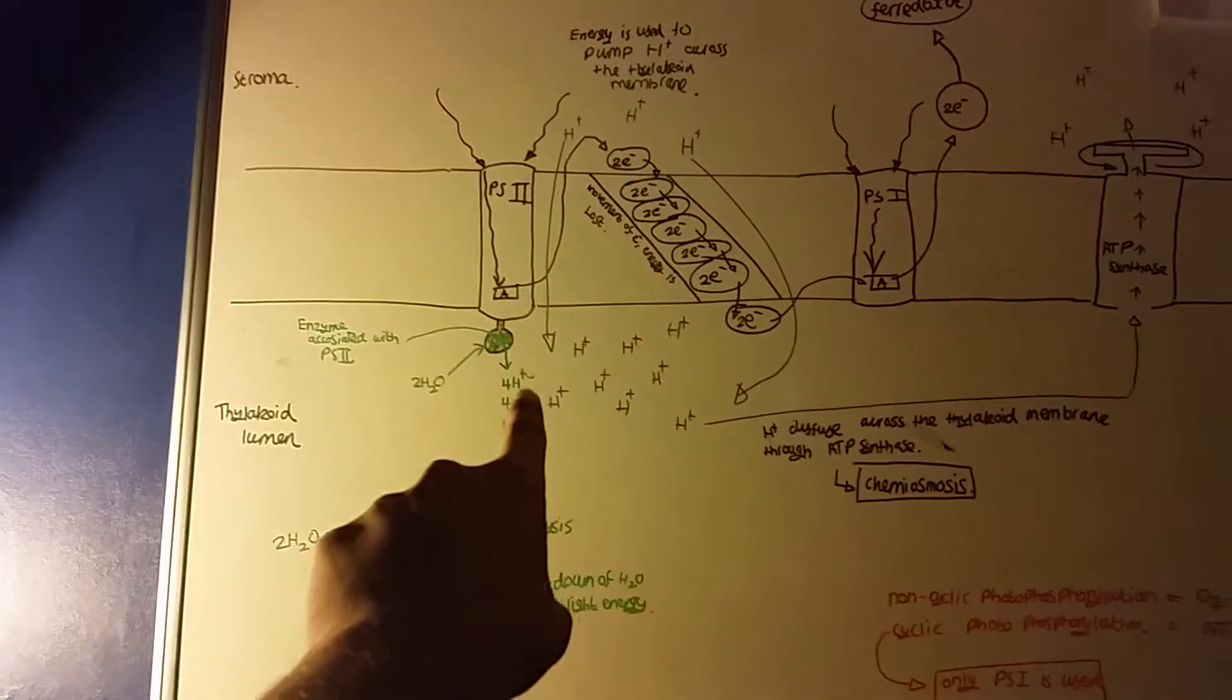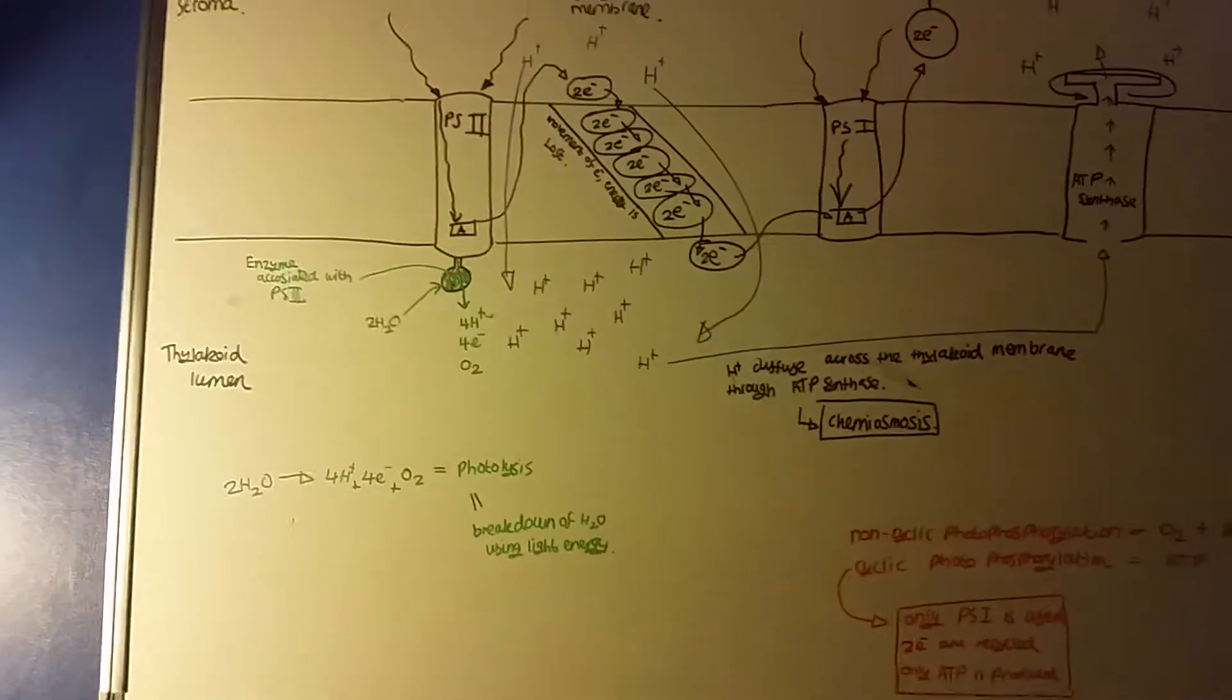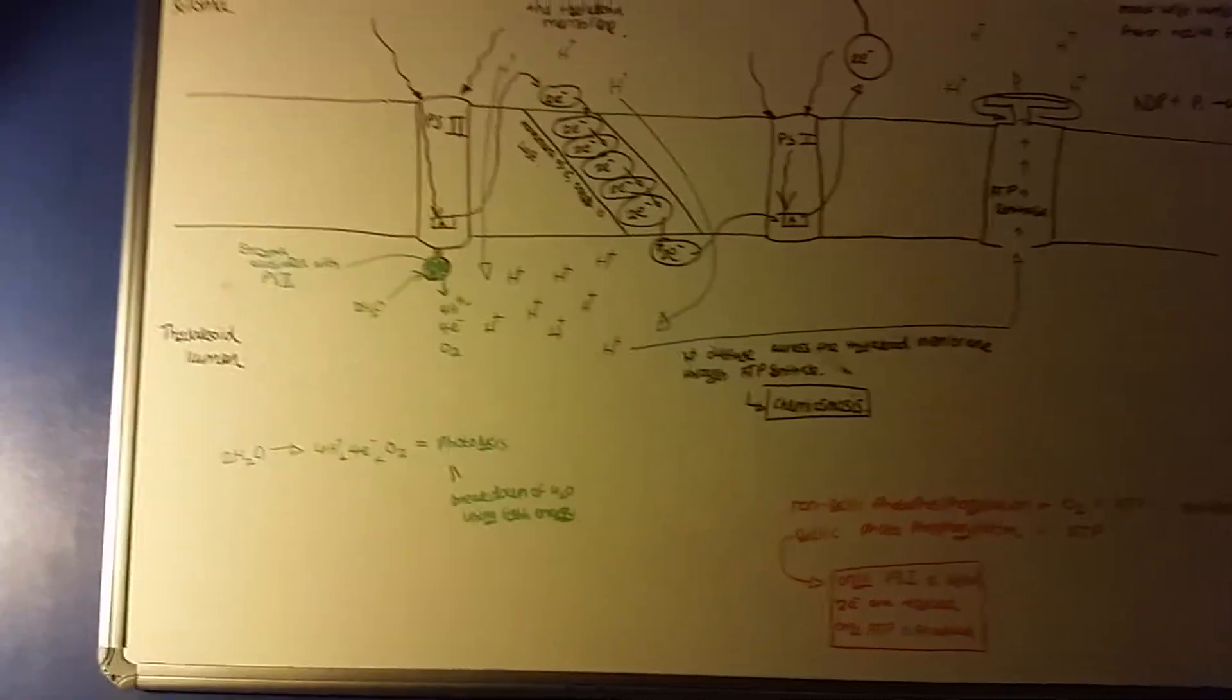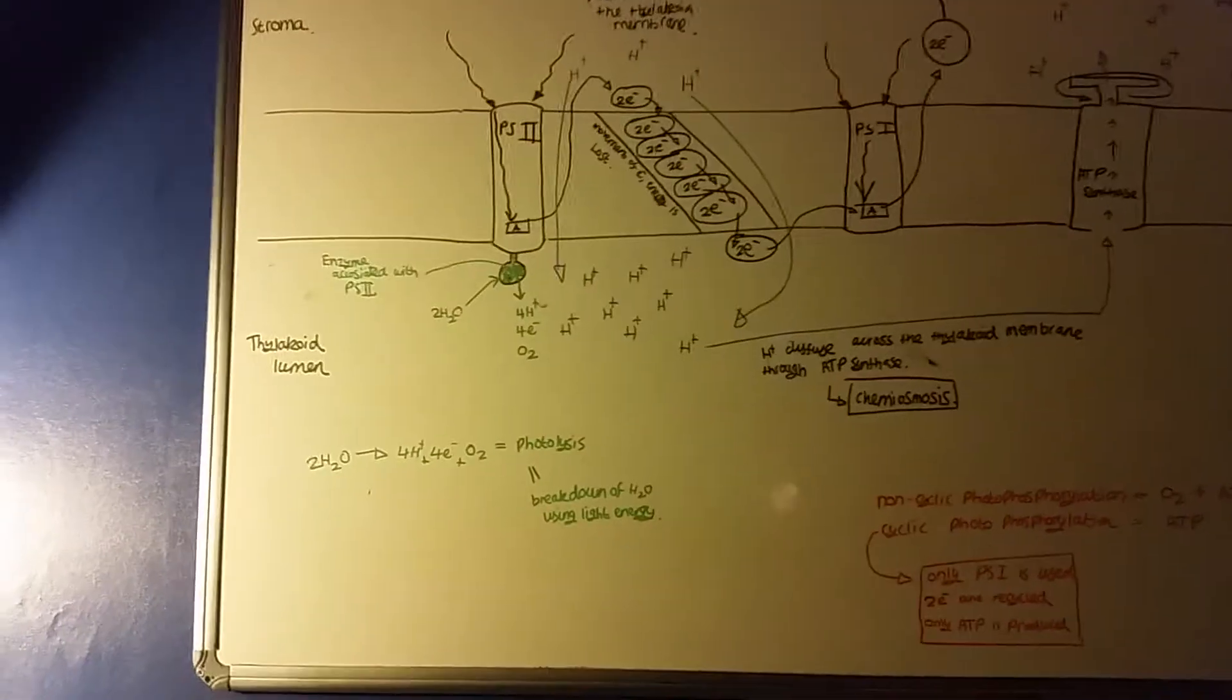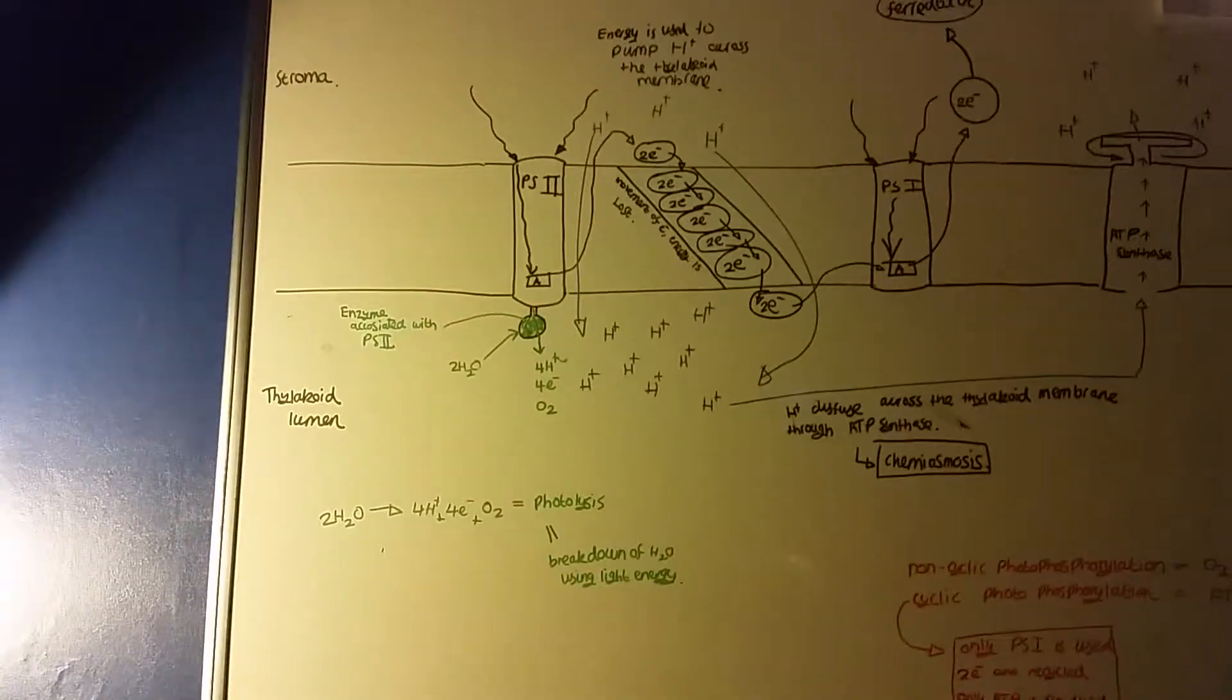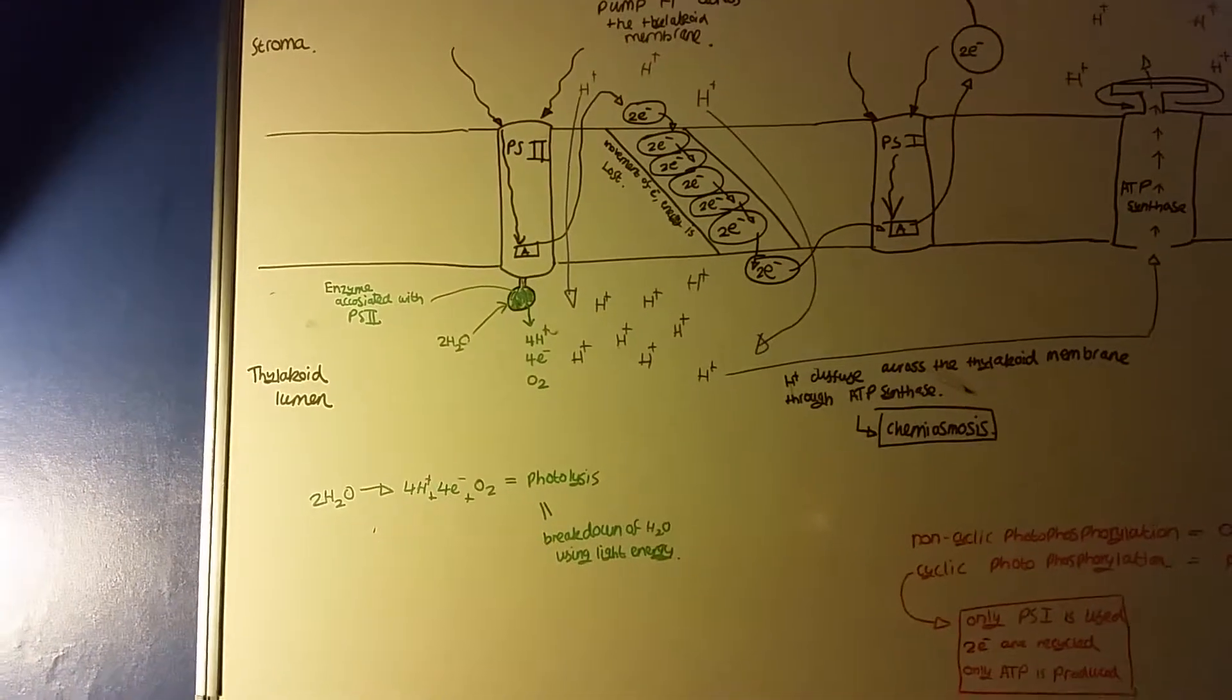Also, there is an enzyme associated with photosystem II, only with photosystem II, not with photosystem I. The role of water here is so that it can be broken down. The enzyme undergoes something called photolysis.